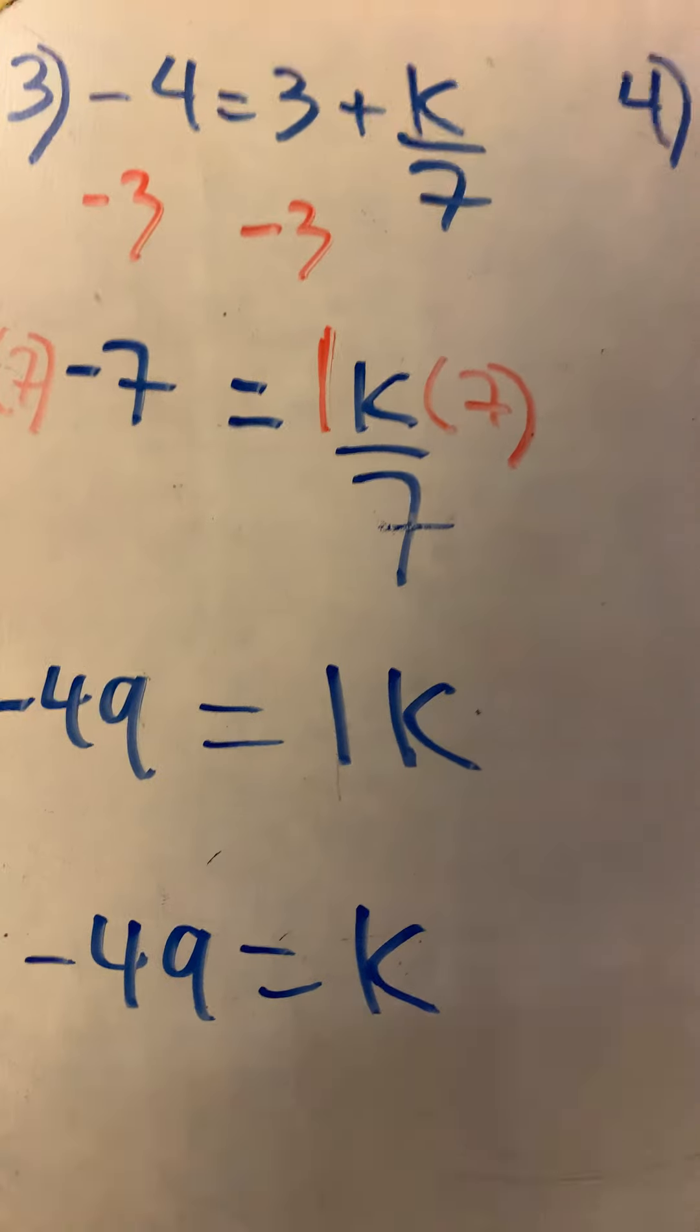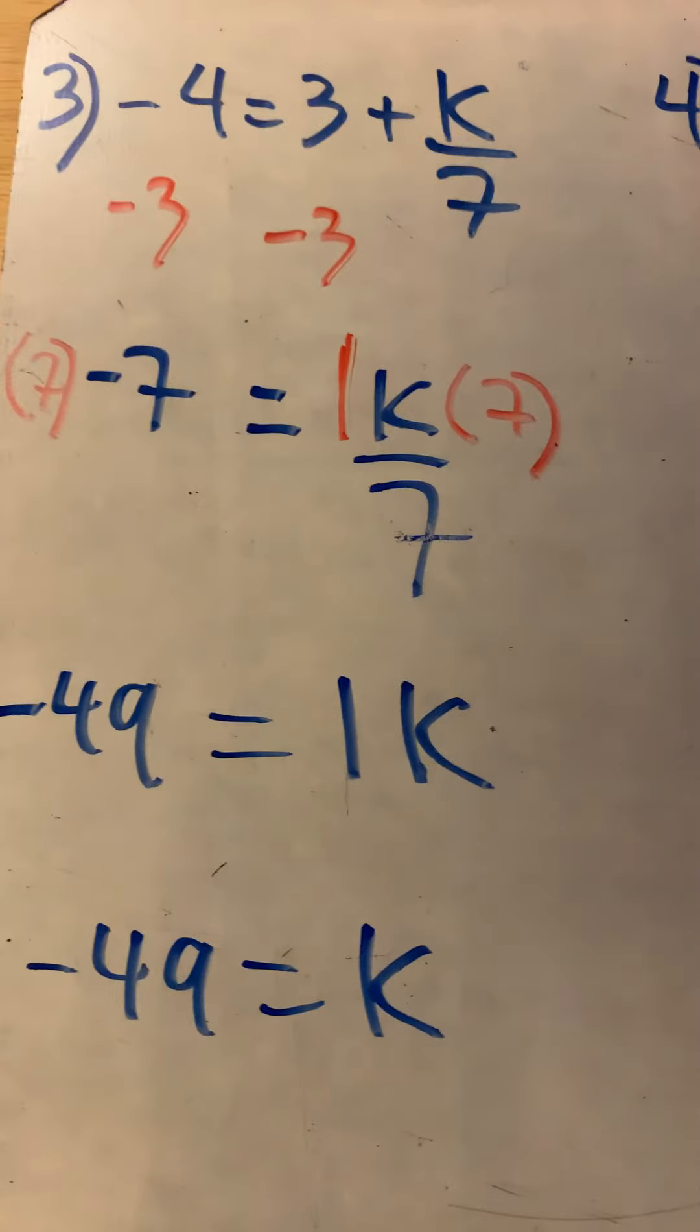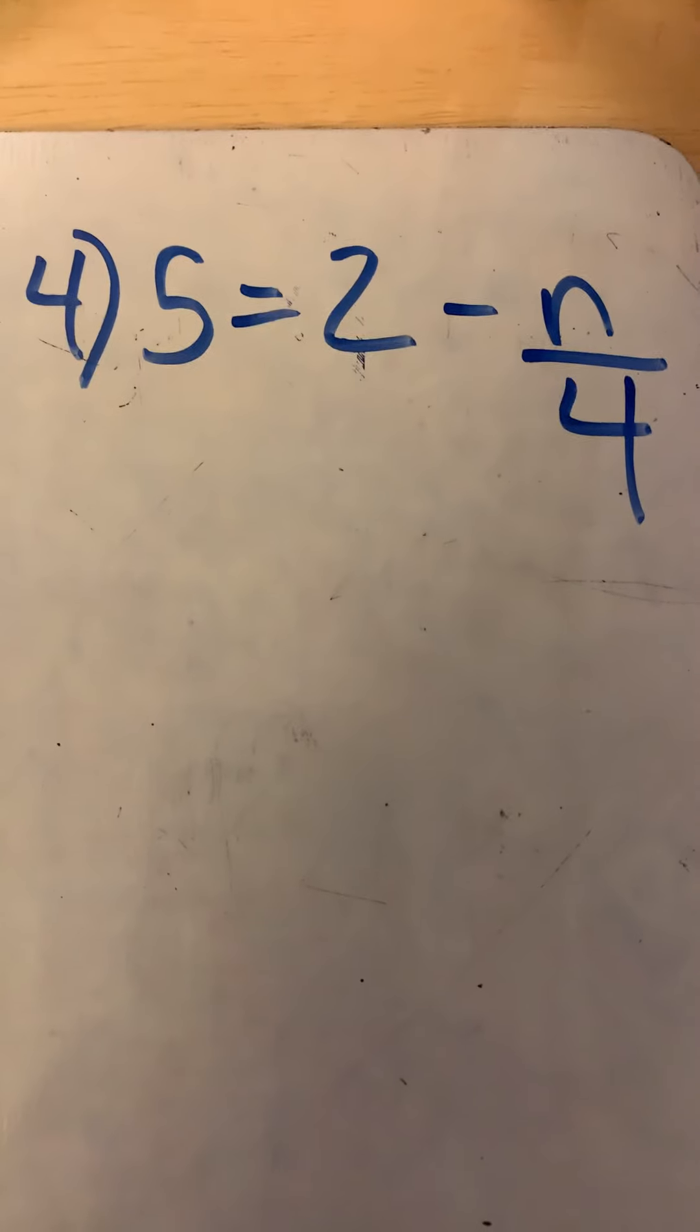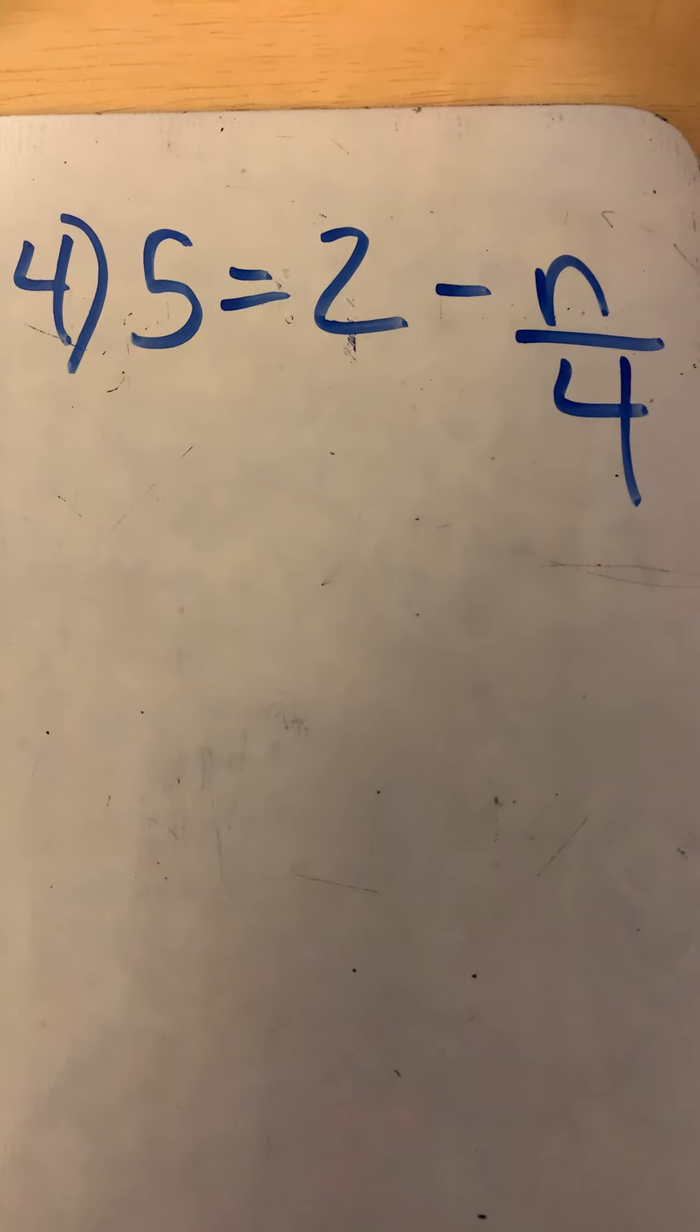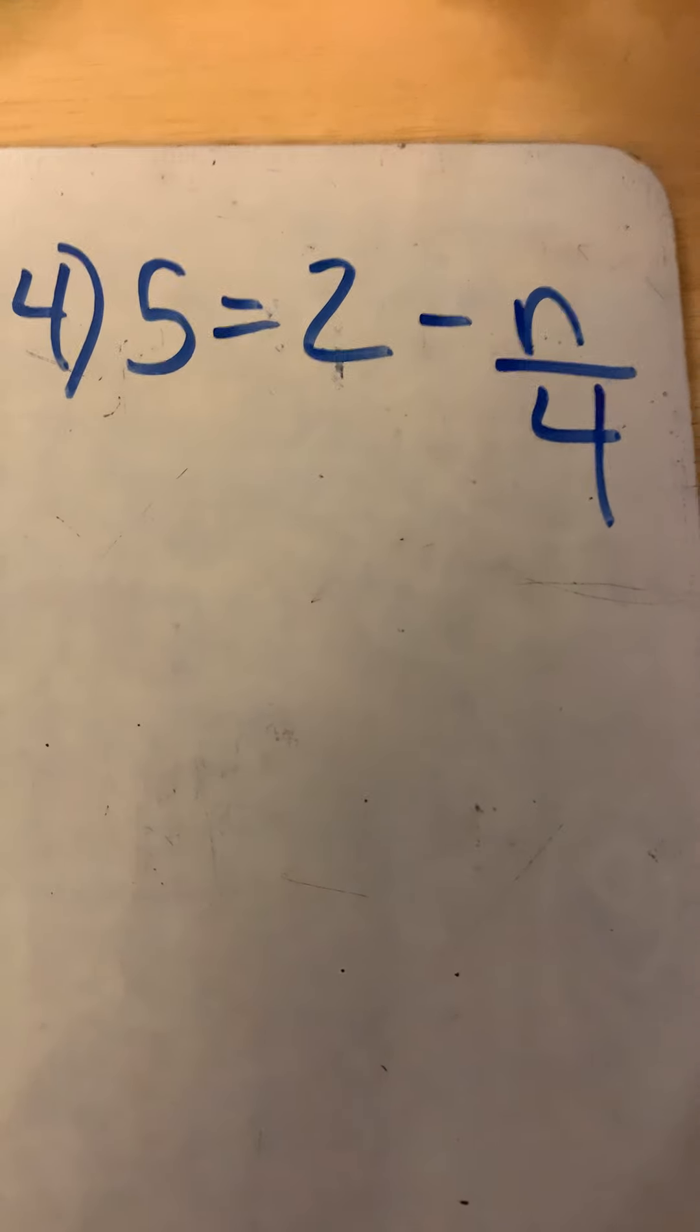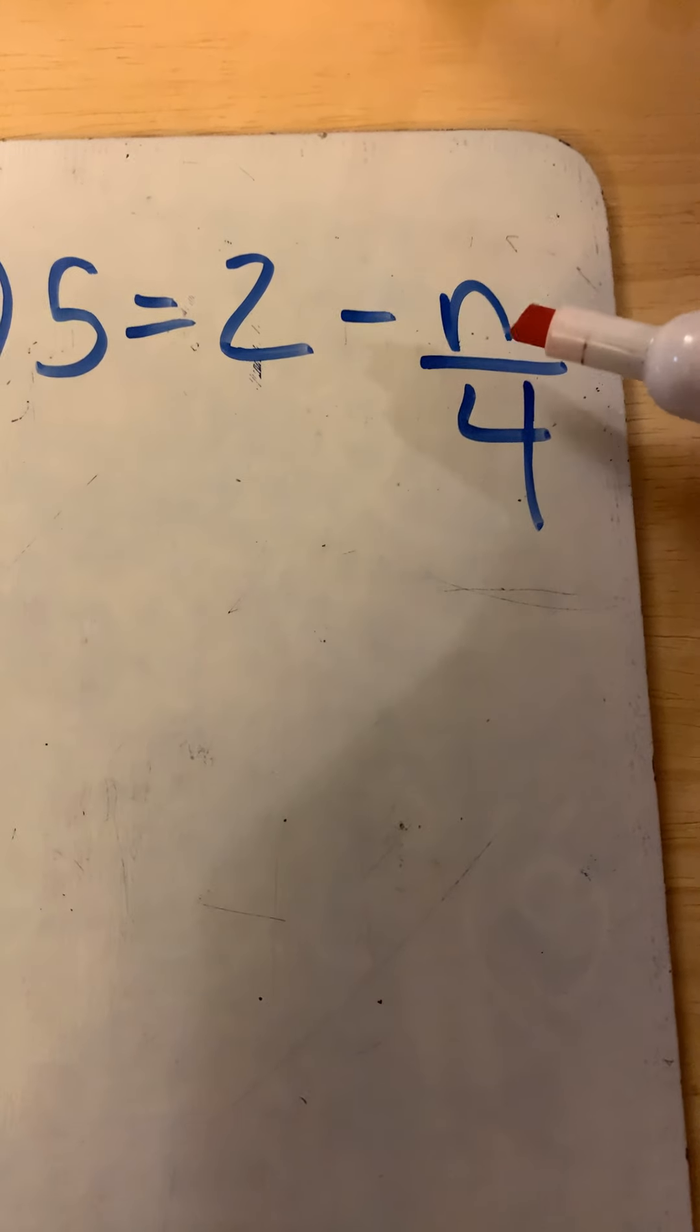It's the same sort of steps every time. There's just little things that are thrown in that can sometimes throw us off. Like in the last example, number four: 5 = 2 - n/4. The side of the equal sign that has the variable is this side. There's the n.